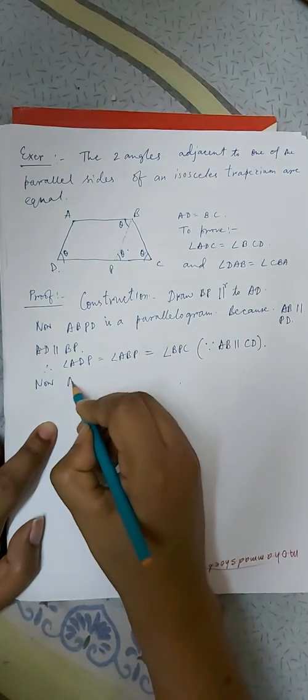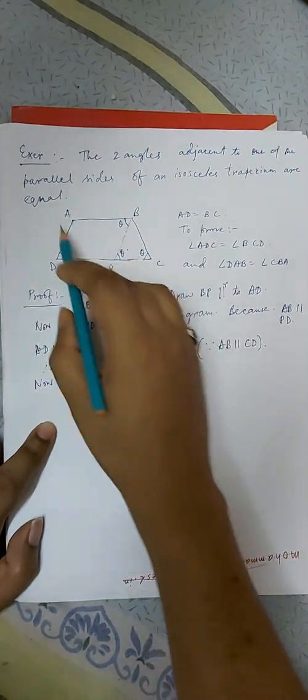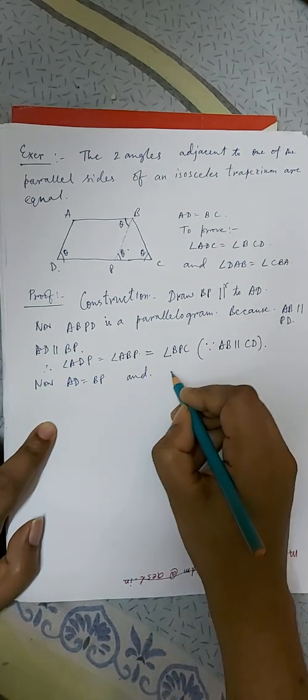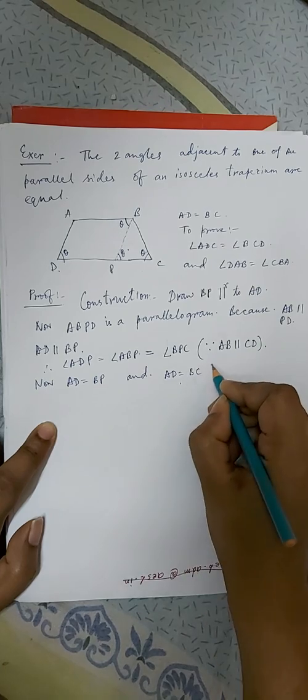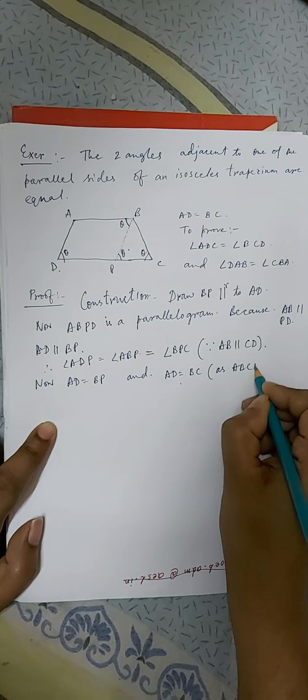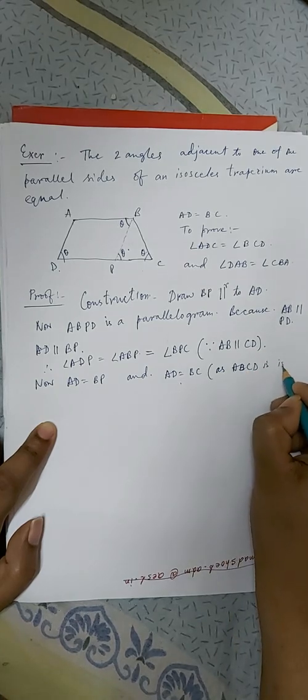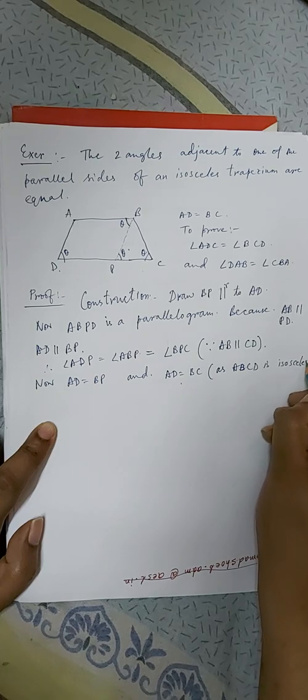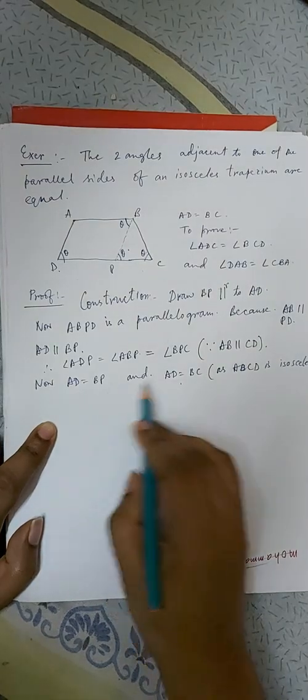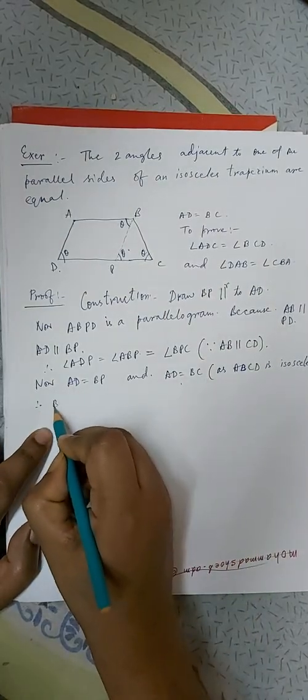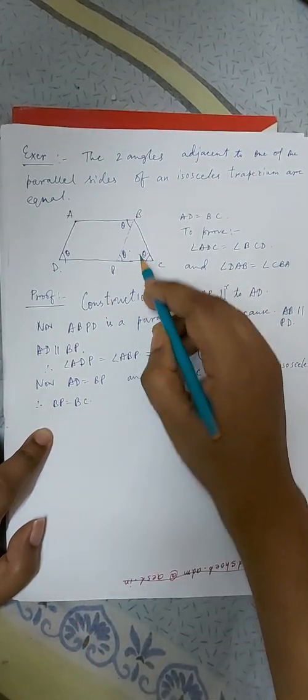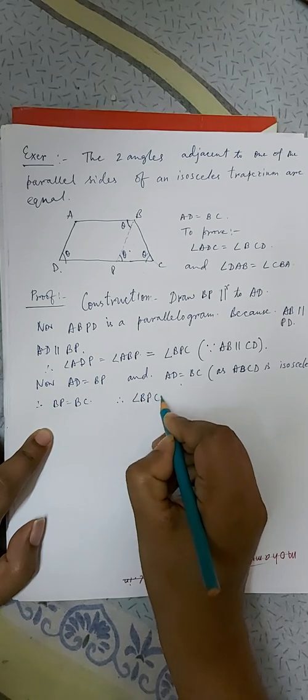Now AD equal to BP because it's a parallelogram, and AD equal to BC as ABCD is isosceles. So BP equal to BC. Now BP is same as BC, so angle BPC will be angle BCP.